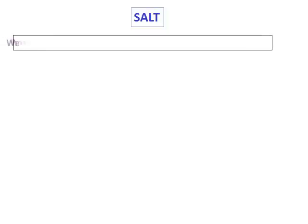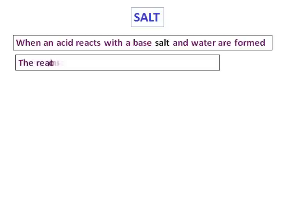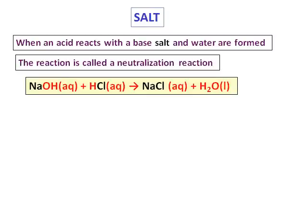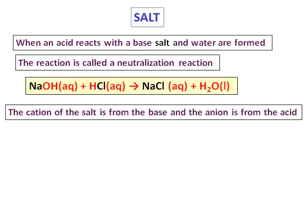Let's learn what a salt is. By definition, when an acid reacts with a base, salt and water are formed, and we call this a neutralization reaction. For example, consider the reaction of sodium hydroxide with HCl — it gives NaCl and water. The cation of the salt, Na, is from the base, and the anion, Cl, is from the acid.